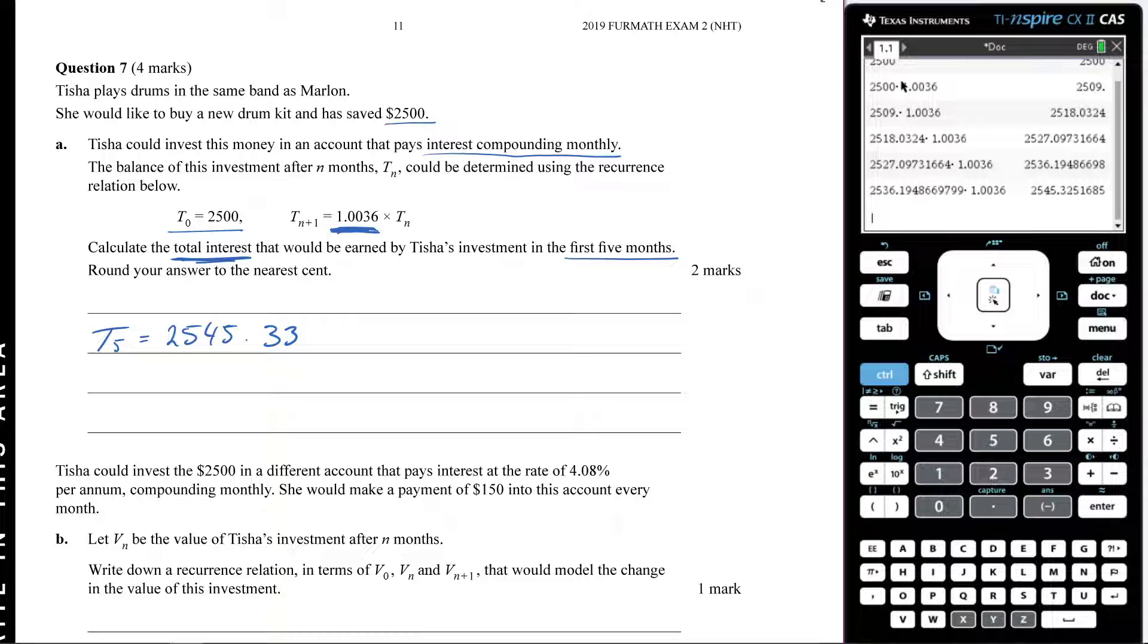Now I'm not done yet. The next thing I would have to do is say, well, I need to figure out the total interest, right? So that means I would have to take my original and subtract it away from that. So I'm going to go $2,545 minus $2,500, what I initially had in there.